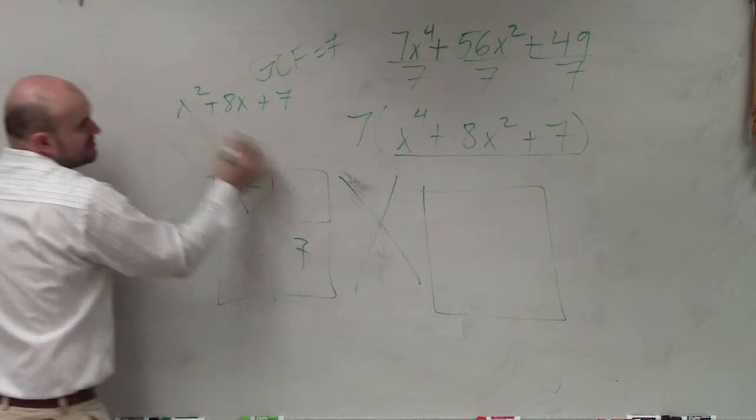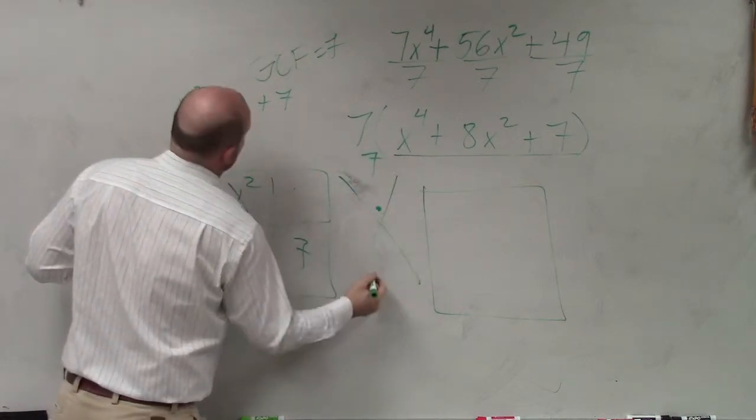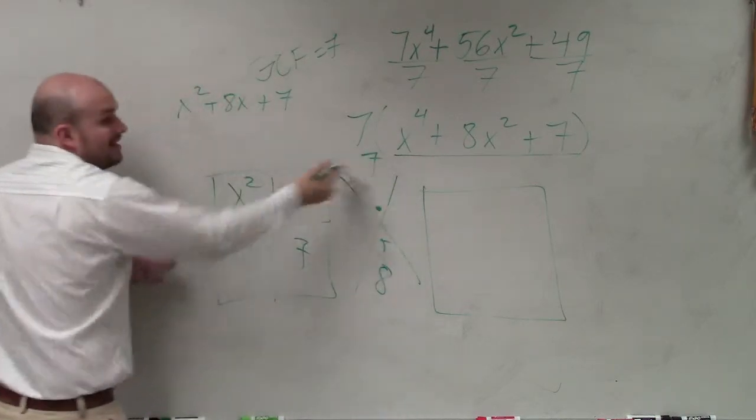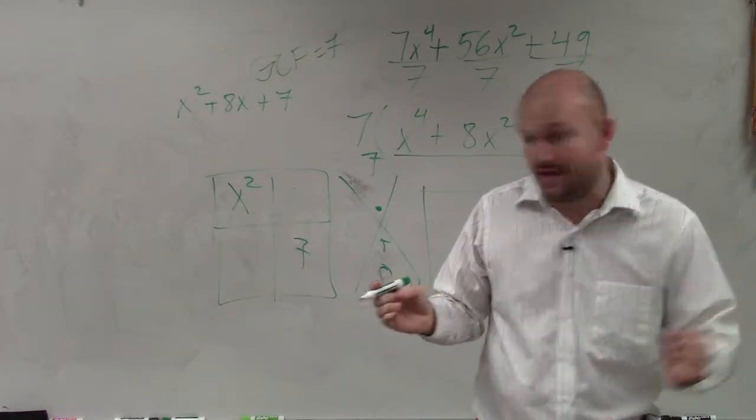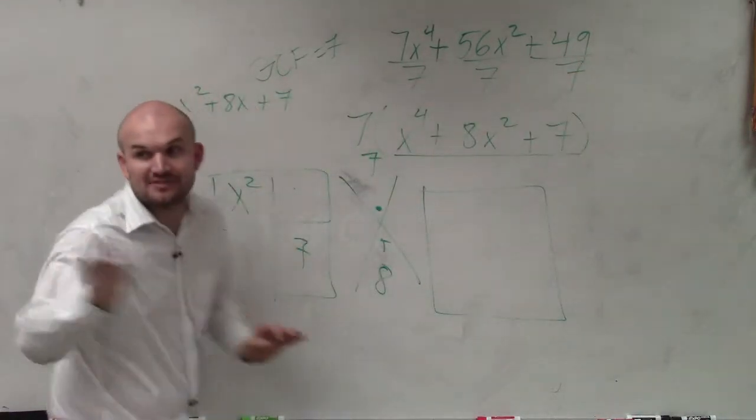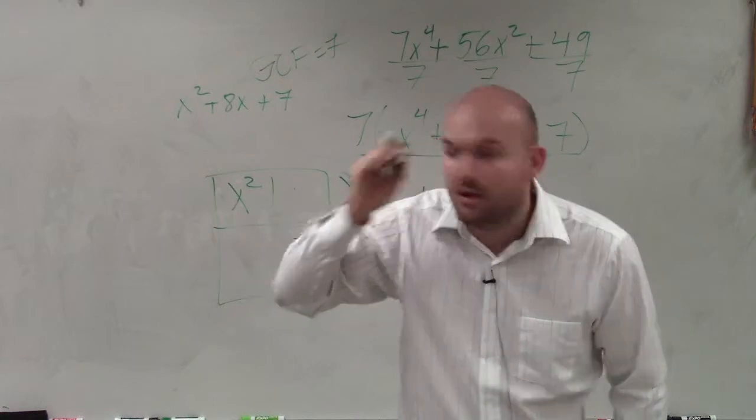So again, using our thing, we'd have 7 multiplied and then 8. What two numbers multiply to give you 7, add to give you 8, correct? Yes? Well, those two values now, Stephen, are going to be 1 and 7. 1 and 7. So you could say 1 times 7.